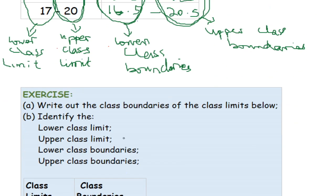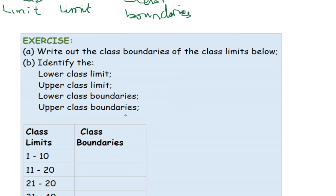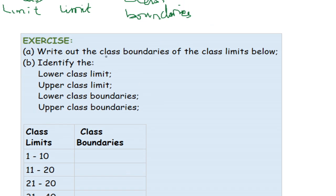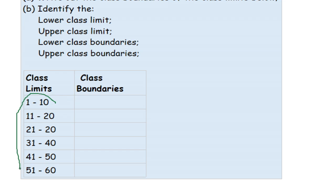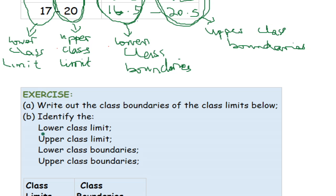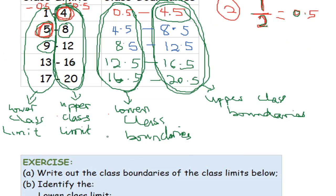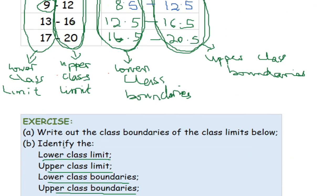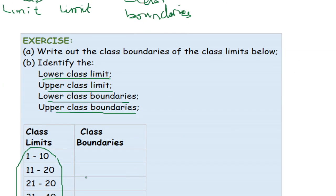Your exercise will be to do exactly what I have done using the given frequency distribution table. Write out the class boundaries from the class limits the same way shown, and identify which values are the lower class limits, upper class limits, lower class boundaries, and upper class boundaries by circling them.